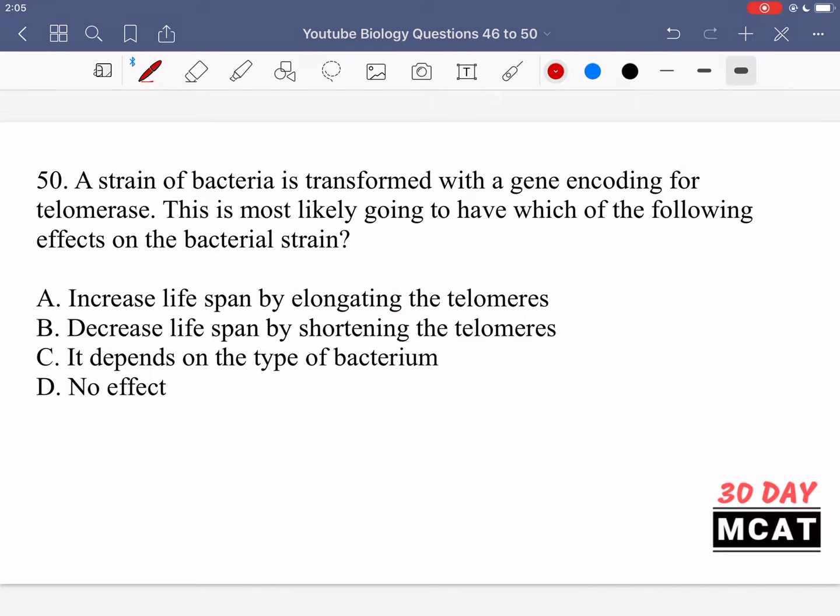And now in question 50, it says a strain of bacteria is transformed with a gene encoding for telomerase. This is most likely going to have which of the following effects on the bacterial strain. So we take a bacteria strain, transform it, and give it telomerase. What is the effect now? So telomerase will grow the telomeres at the end of chromosomes, which protects them when you have division due to mitosis. And therefore, if something has telomerase, you can expect it to have a longer life overall, because there's less damage to the chromosomes.